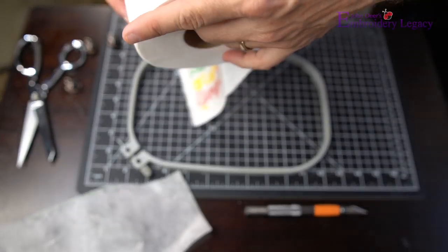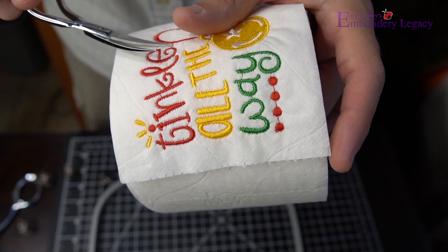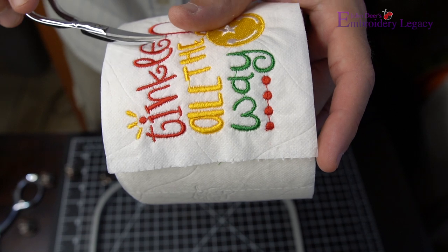Now that our stabilizer has been removed, we can simply roll up our toilet paper and clean up any loose stitches that you see, again being very careful not to slice into the toilet paper.